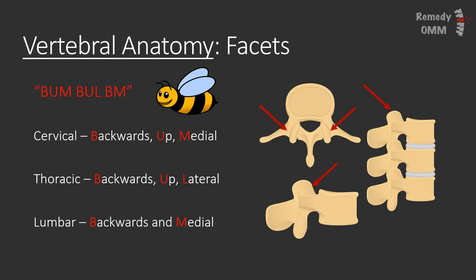This is a more low yield topic — I've seen maybe less than five questions dealing with it — but the idea is that the portion of the vertebra that connects to the one above is called a facet, and in varying regions of the spine facets face in different directions. The mnemonic here is 'bum bull bum.' The cervical segments face backwards, up, and medial; the thoracic face backwards, up, and lateral; and the lumbar face backwards and medial.